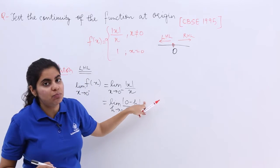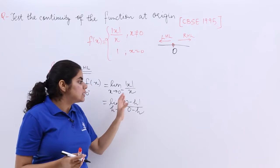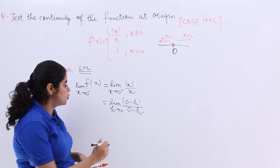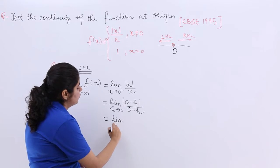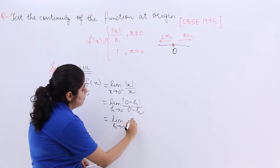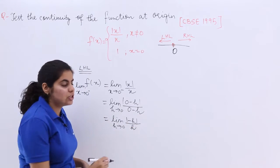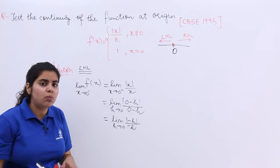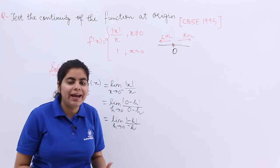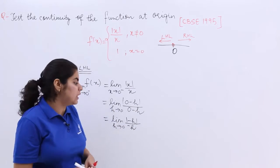Firstly, 0 minus h is in mod. Now what happens? 0 minus h is minus h. So it is limit h tends to 0, minus h above will be mod and here 0 minus h is minus h. Now what is mod of anything? It makes it positive.